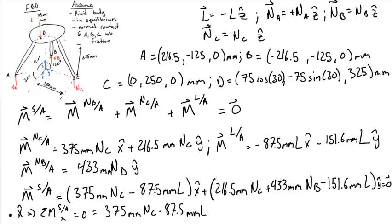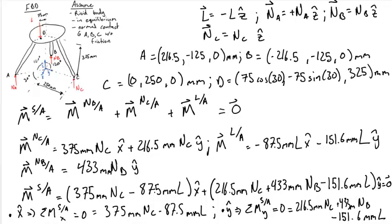Dotting the vector equation with the x vector, we can get the sum of the moments about the system in A in the x components is equal to zero.